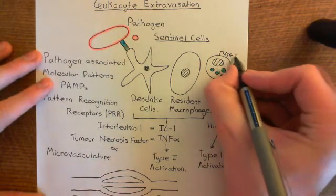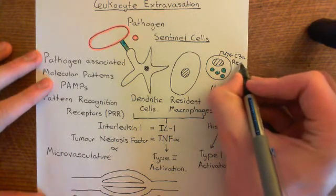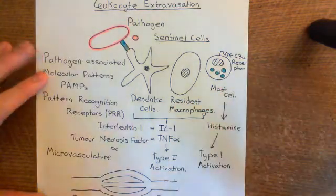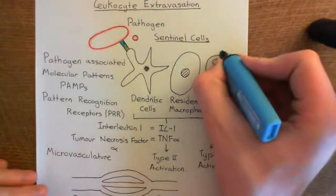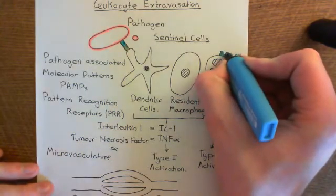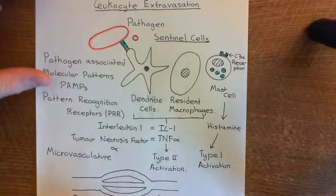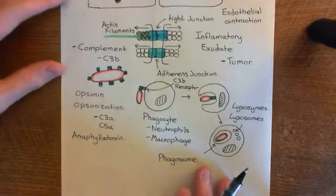You have a C3A receptor and a C5A receptor on mast cells. C3A or C5A will bind to its corresponding receptor and cause mast cell degranulation — causing further release of histamine. This gives a positive feedback effect whereby histamine release is now causing more histamine release. So that's a nice positive feedback loop.